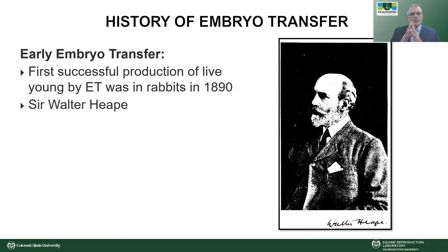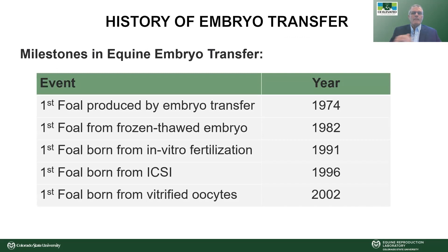Just for fun — the first embryo transfer ever reported was in 1890. Sir Walter Heap did an embryo transfer between rabbits, and to my knowledge that's the first one ever done in any mammalian species. For the horse, the first foal produced by embryo transfer was born in 1974. Frozen embryos — first foal born in 1982, in Japan. In vitro fertilization was achieved in France in 1991. The first foal born from intracytoplasmic sperm injection was in 1996 here at Colorado State, as was the first foal born from vitrified oocytes, reported in 2002, also at Colorado State.